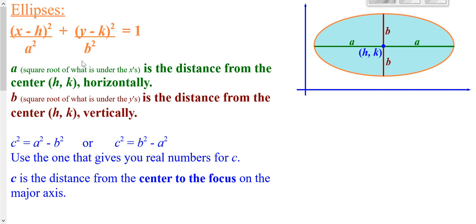The standard form of an ellipse has h and k as your center, just like it is for a circle — the opposite of what's after the x, and opposite of what's after the y, equal to 1. Your y's are over something squared and your x's are over something squared. You would plot your center, and how far you go left and right from your center is a — the square root of what is underneath your x's. Since x goes left and right, the square root of that tells you how far to go left and right. How far you go up and down is always the square root of what's underneath your y's.